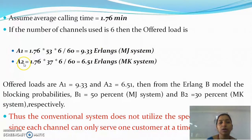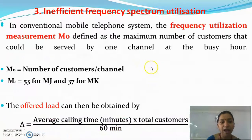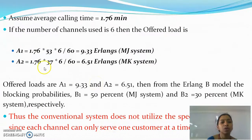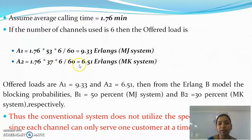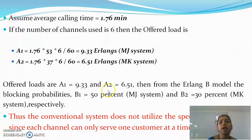For the MK system, substituting the same number of 6 channels but with 37 customers per channel: A2 = 1.76 × (37 × 6) / 60 = 6.51 Erlangs. So the offered loads are A1 = 9.33 Erlangs for the MJ system and A2 = 6.51 Erlangs for the MK system.